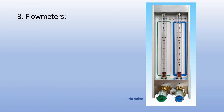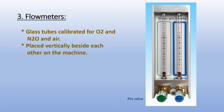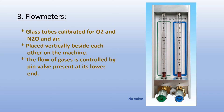The third component is the flow meter. It is a glass tube calibrated for oxygen, nitrous oxide, and air. Each tube is dedicated to a specific gas. The tubes are placed vertically beside each other on the machine. The flow of gas is controlled by a pin valve present at the lower end — this is the pin valve of the nitrous oxide and this is the pin valve of the oxygen.